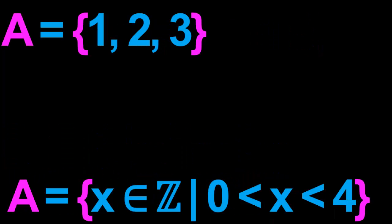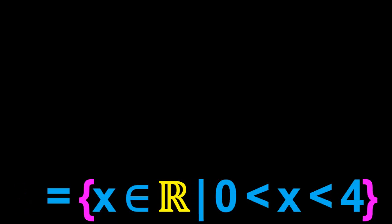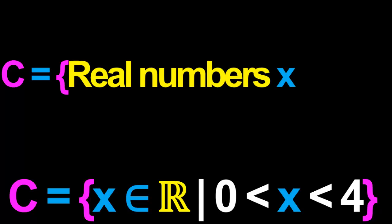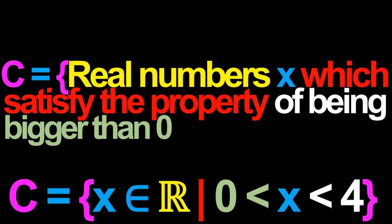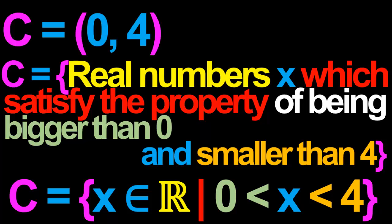Let's go back to the set A, which we'll modify a little by changing Z, the set of integers, to R, the set of real numbers. Let's call this new set C. The set C is simply going to be the set of real numbers x which satisfy the property that x is bigger than 0 and smaller than 4. And of course, we already know that there's an alternative piece of notation for C — we can write C simply as an interval.